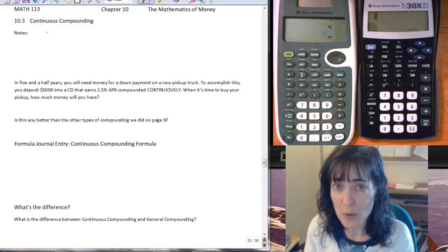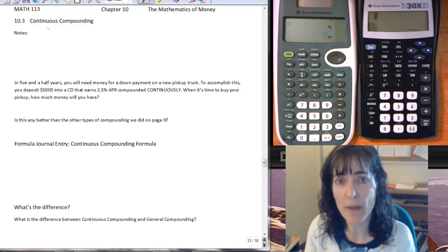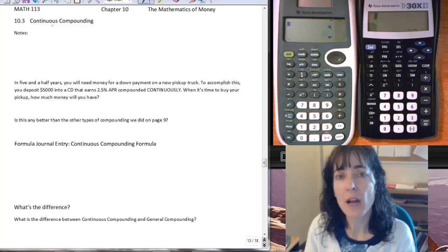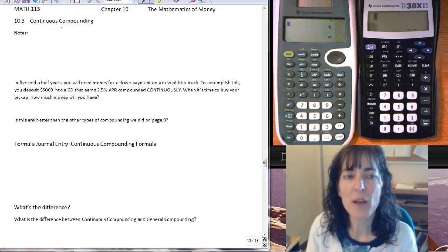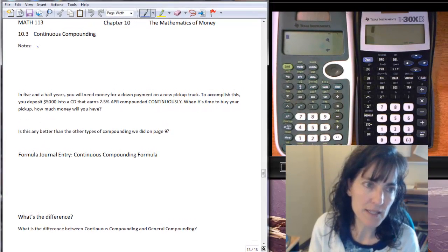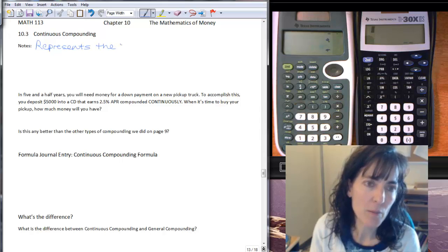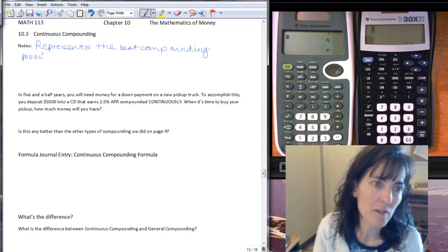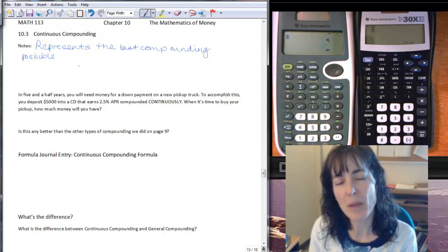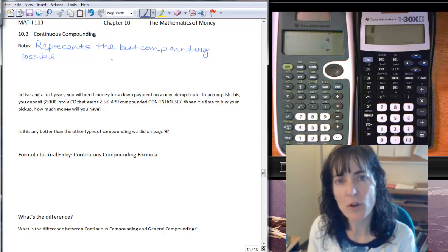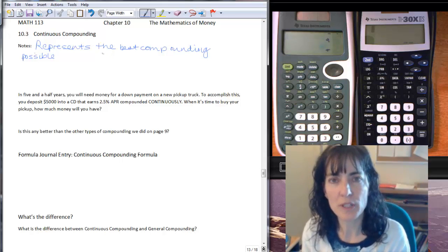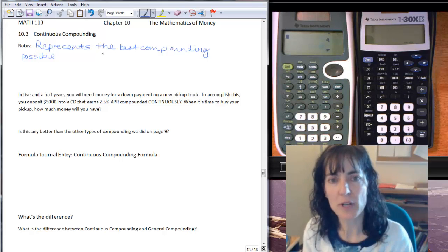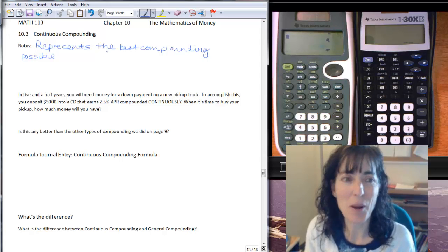Now there aren't really any accounts that use continuous compounding. It's used more in financial mathematics to make predictions and to see where the money is going, what direction you're heading with it. Continuous compounding represents the best compounding possible. What mathematicians found is that the smaller and smaller the periods of time that you did the compounding, the closer and closer it got to this formula, so it never gets better than continuous compounding.